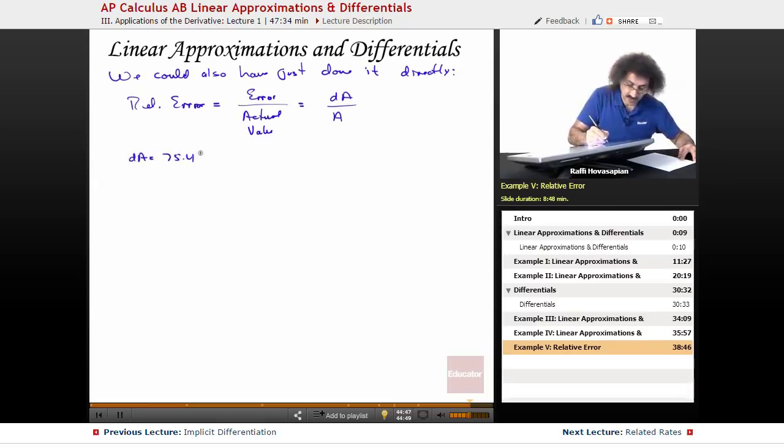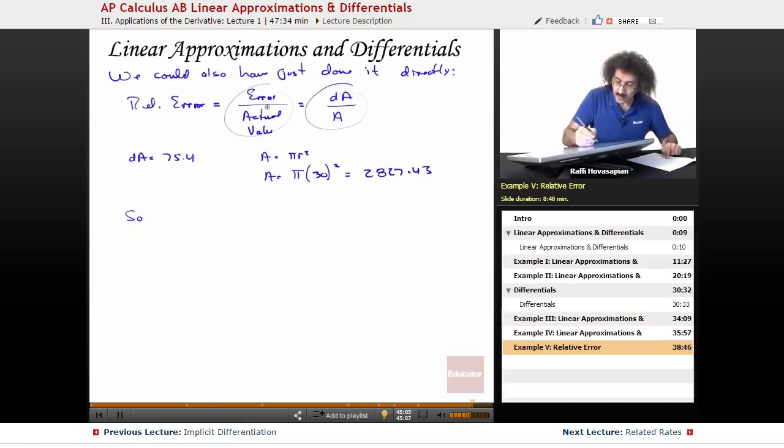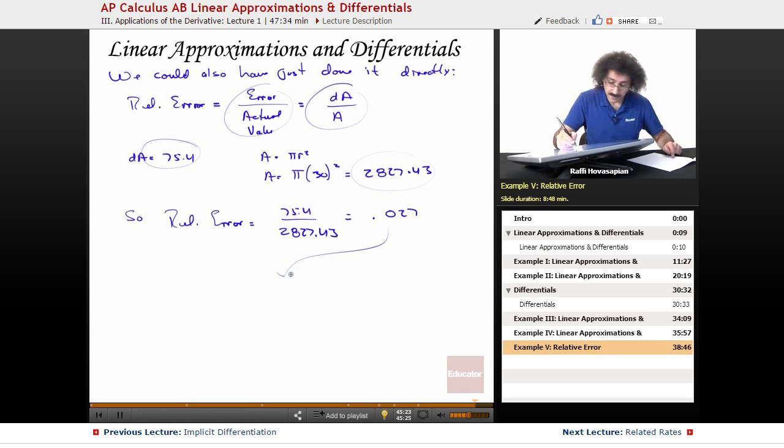dA over A. We found dA, we found 75.4. Well, area is equal to πr². Area equals π times 30 squared, is equal to 2827.43. So, dA over A, error over actual value. So, equals 75.4 over 2827.43 equals 0.027. And, again, this can give, if I want to speak in terms of percent, 2.7%.